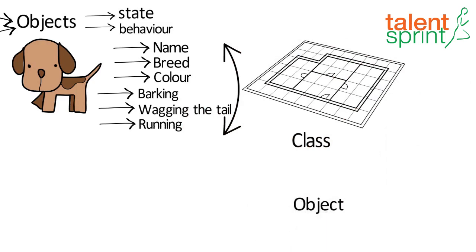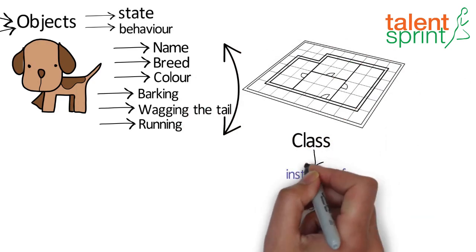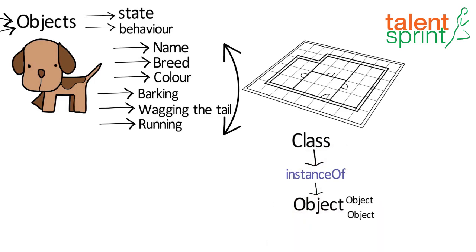So object is simply put the instance or result of a class, and a class can have multiple objects.